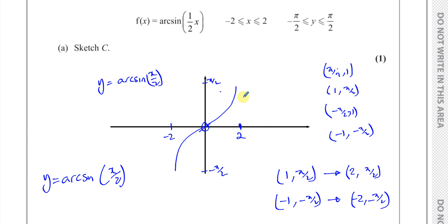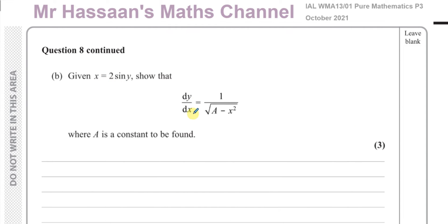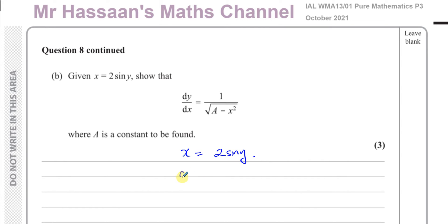Now we go on to part b. Part b says: given that x equals 2 sine y, show that dy/dx equals 1 over the square root of a minus x squared, where a is a constant to be found. We've got to start with x equals 2 sine y and find dy/dx in terms of x. We'll start by finding dx/dy, since it's difficult to make y the subject directly.